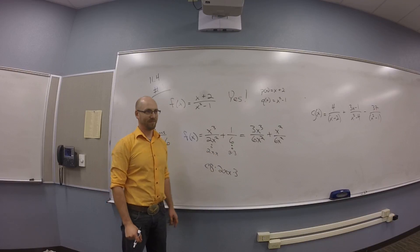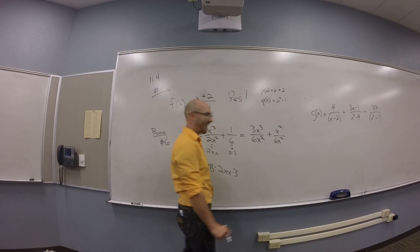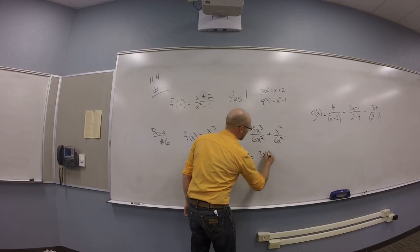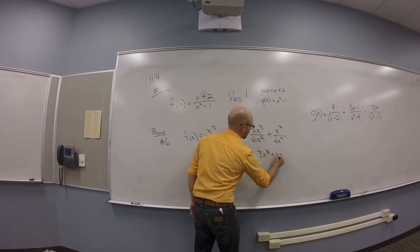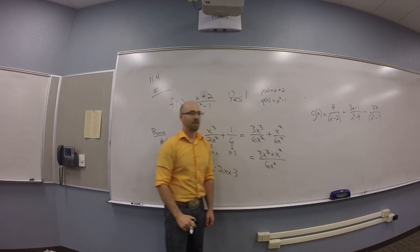So it's got a 2. It's already in there. It was already in there. Okay. So then you got 3X cubed plus X squared all over 6X squared. And that is definitely rational.